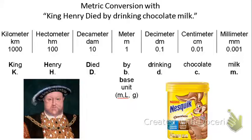Let's look at doing metric conversions with King Henry died by drinking chocolate milk. There are six metric prefixes that you should be familiar with.